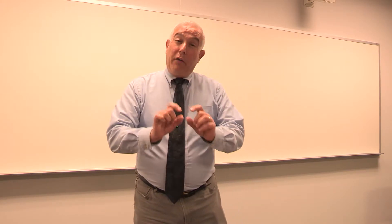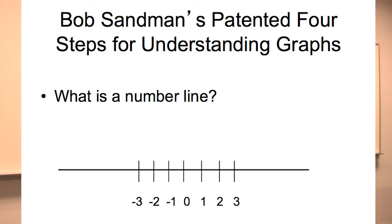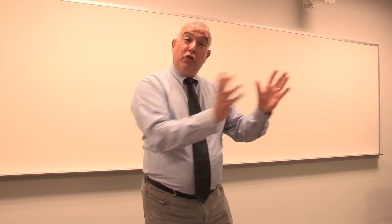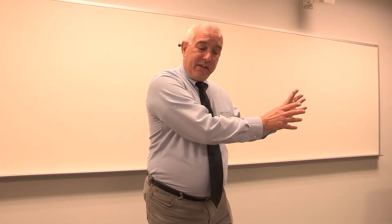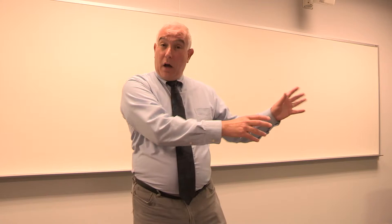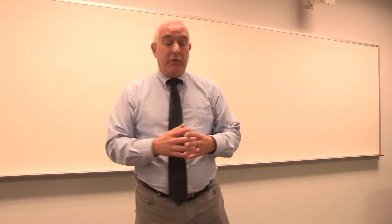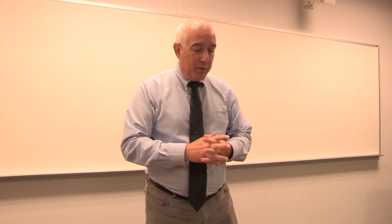Before we start, think about a number line. A number line is a horizontal line that is subdivided with little tick marks. And by common agreement, numbers to the right are greater than zero — positive numbers — and numbers to the left are negative numbers, less than zero.